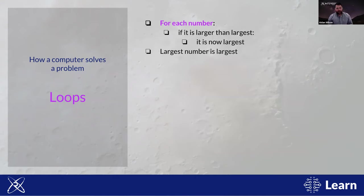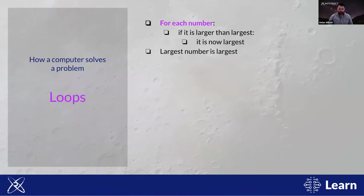Another way the flow of a computer program can change is through loops. Humans don't like performing repetitive tasks — they're boring and we make mistakes. Computers are very good at them. The way to tell a computer to do a task repetitively is by using a loop. In our 'finding the largest number' exercise, we repetitively checked every new number and compared it with the largest so far. Without a loop, you'd have to copy and paste that conditional block again and again — making your code cumbersome, difficult to read, and brittle.